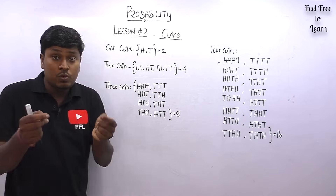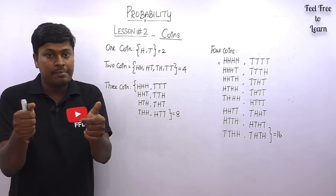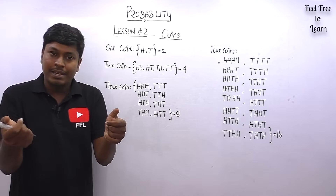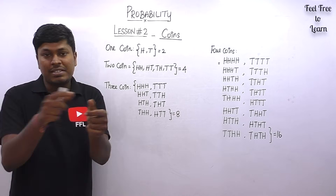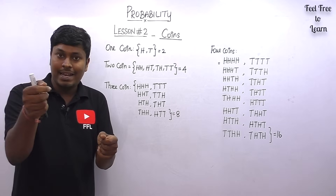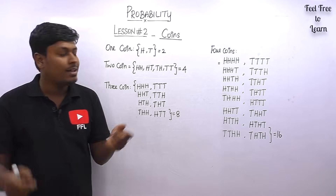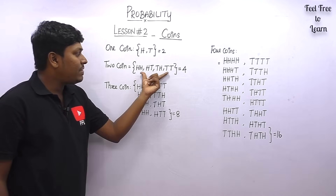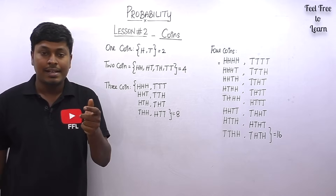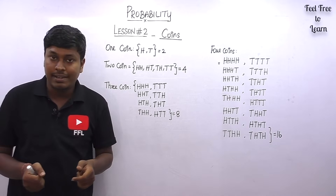If two coins are tossed simultaneously, the possible outcomes are: both heads, both tails, right heads and left tails, or left heads and right tails — giving us four total possibilities.